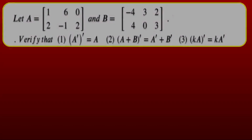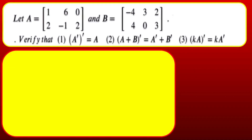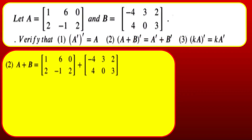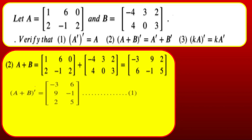For the second property, verify (A+B)^T = A^T + B^T. First compute A+B: [[1+(−4), 6+3, 0+2], [2+4, −1+0, 2+3]] = [[−3, 9, 2], [6, −1, 5]]. Then (A+B)^T has first column [−3, 6], second column [9, −1], third column [2, 5], giving [[−3, 6], [9, −1], [2, 5]].